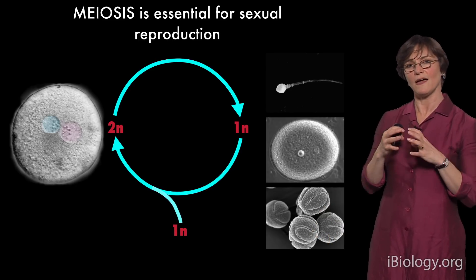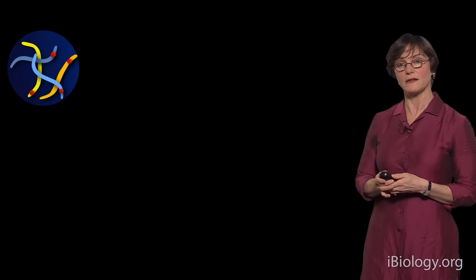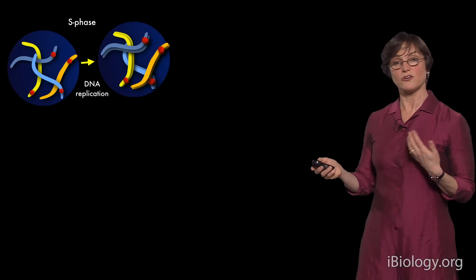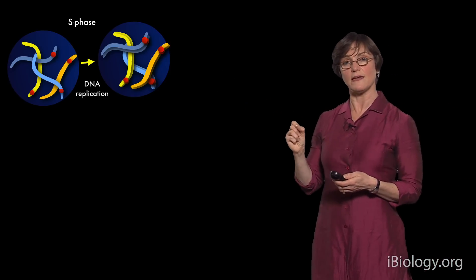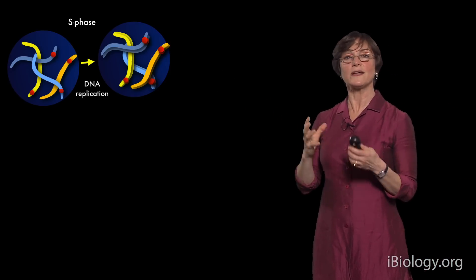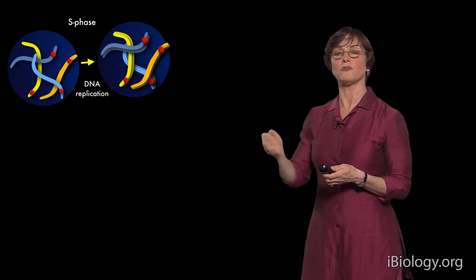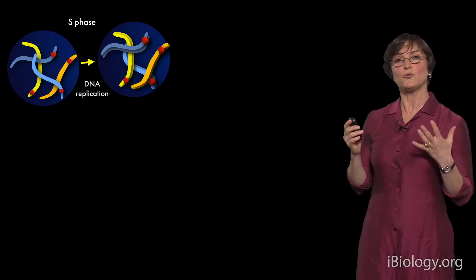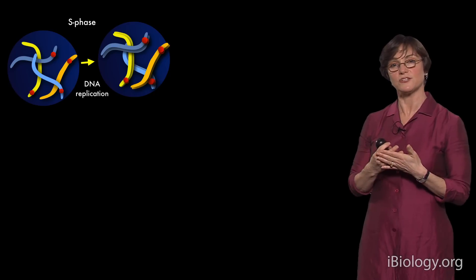What really differentiates mitosis and meiosis is the fact that the chromosomes going to segregate in the first meiotic division do not start out together. In mitosis, chromosomes undergo replication — you have two sisters held together by cohesion until segregation. But in meiosis, the goal is to separate the two copies of chromosomes from your two parents, and those chromosomes, called homologues, have to first pair with each other.